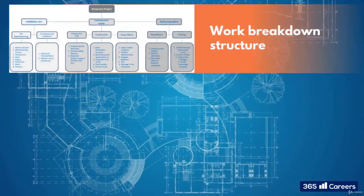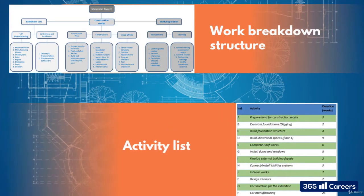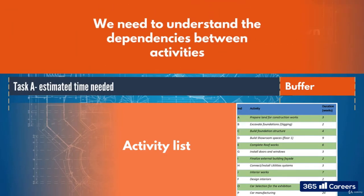Things are chugging along nicely at this point. We have a work breakdown structure and activity list, we've got an estimation of their durations and we stuck some buffers on to cover our backs. But things do look a bit like an activity soup right now. We need to unjumble this mess and see how activities link with each other — in other words, we need to understand their dependencies.